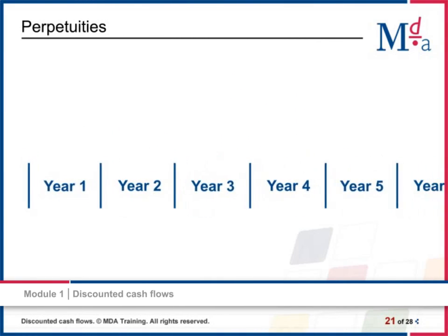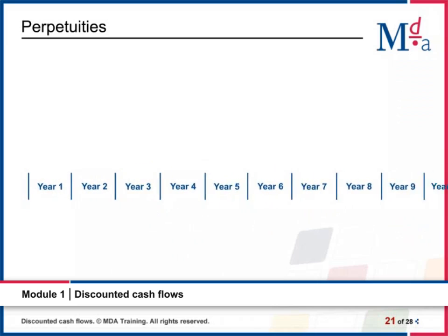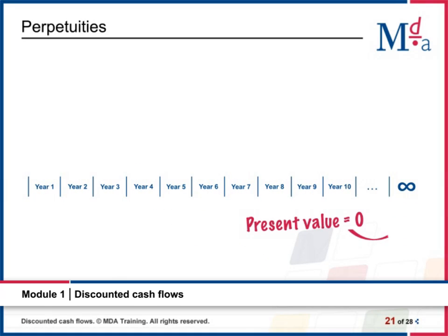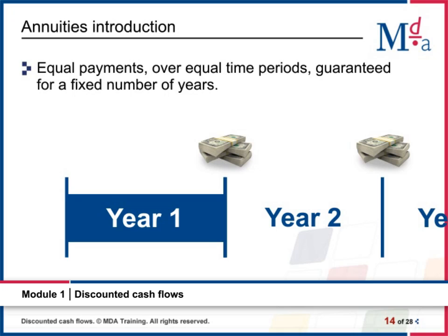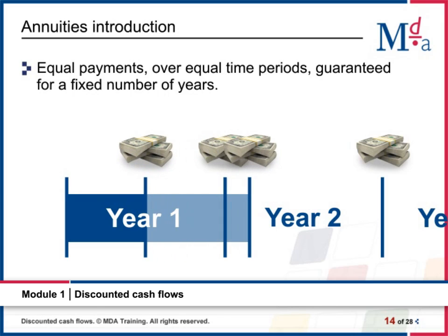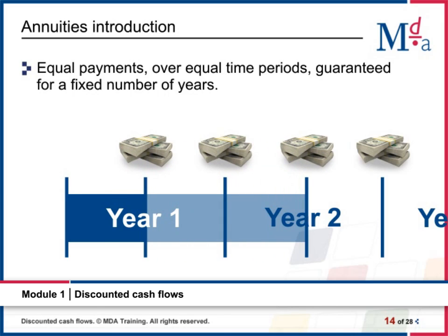In part one, we begin by looking at discounted cash flows, using this concept to find the present values of annuities, constant and growing perpetuities.